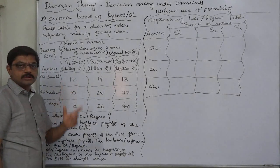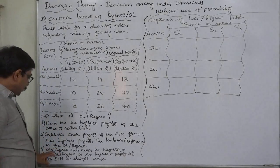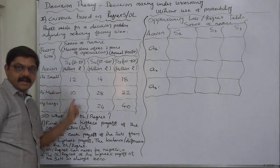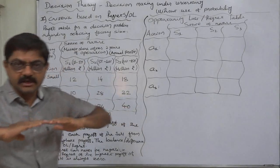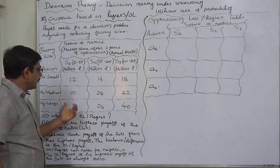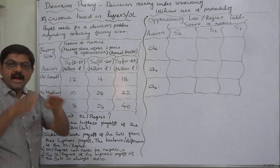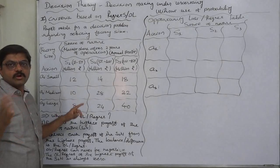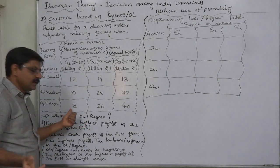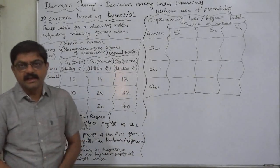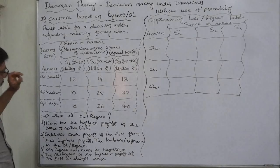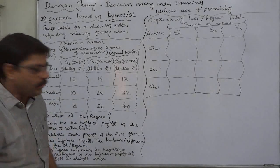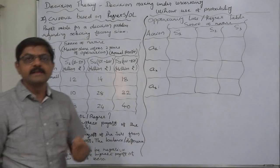Opportunity loss or regret can never be negative, because all values are subtracted from the highest. In each and every cell, it is always higher minus lower, or higher minus higher. In the case of higher minus higher, the opportunity loss is 0. In the case of higher minus lower, the difference is always positive. So opportunity loss or regret can never be negative, and in the cell having the highest payoff of the state of nature, the opportunity loss is always 0.